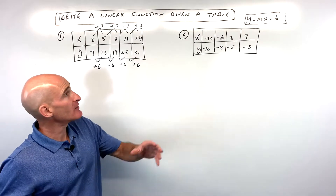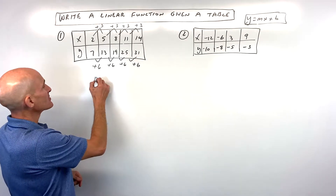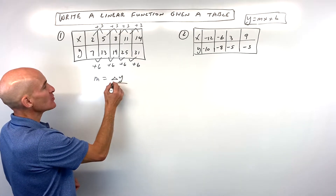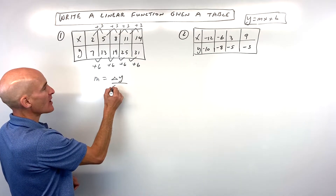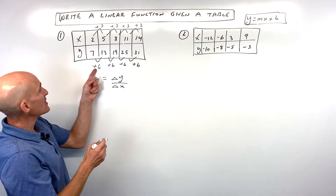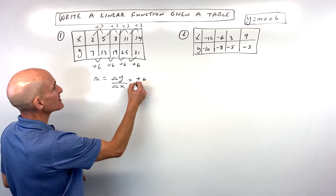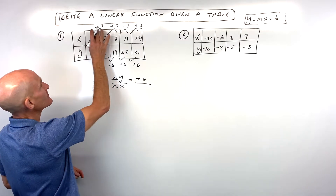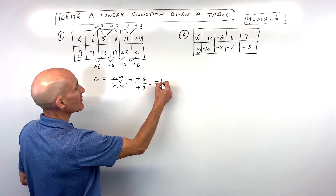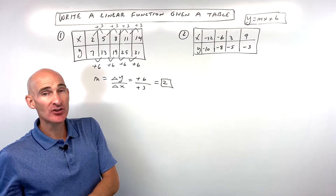Now when you think of the slope — the m value — the slope is equal to the change in y over the change in x. The change in y is going up by six, and the x values are going up by three. Six divided by three is two. So that's our slope.